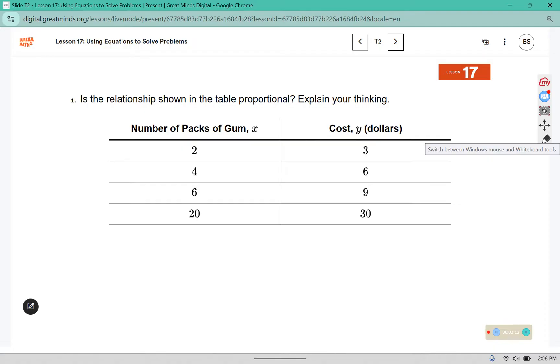Number 1 says, is the relationship shown in the table proportional? Explain your thinking. For something to be considered proportional, every time we divide the y value by the x value, it needs to come out to the same number.